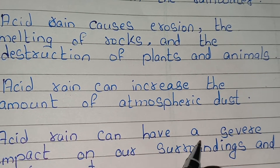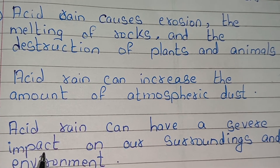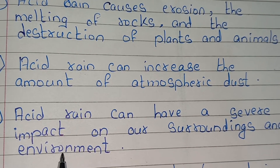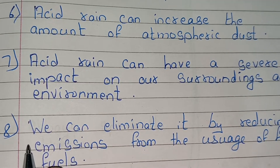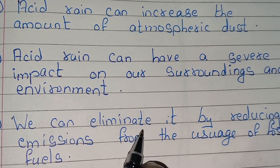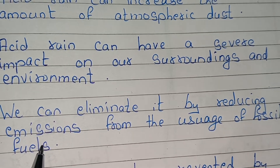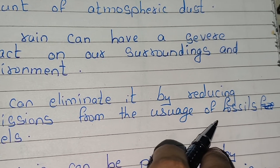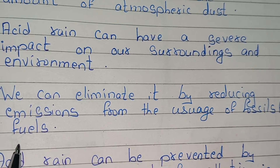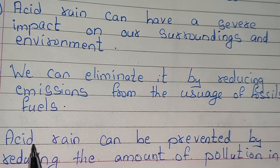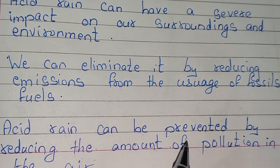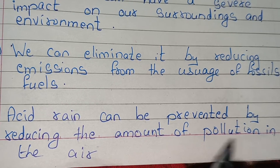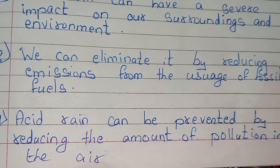Acid rain can have a severe impact on our surroundings and environment. We can eliminate it by reducing emission from the usage of fossil fuels. Acid rain can be prevented by reducing the amount of pollution in the air.